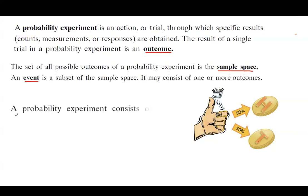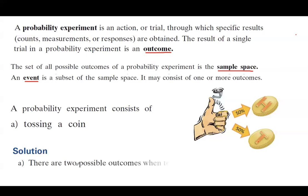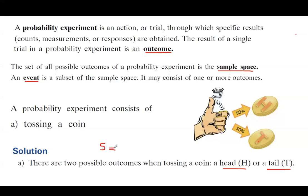Take a look at the following scenario. Suppose you have a probability experiment which consists of tossing a fair coin. In that case, the sample space — the set of all possible outcomes — includes two values: head and tail. So the sample space S equals the set {head, tail}. It has two members.